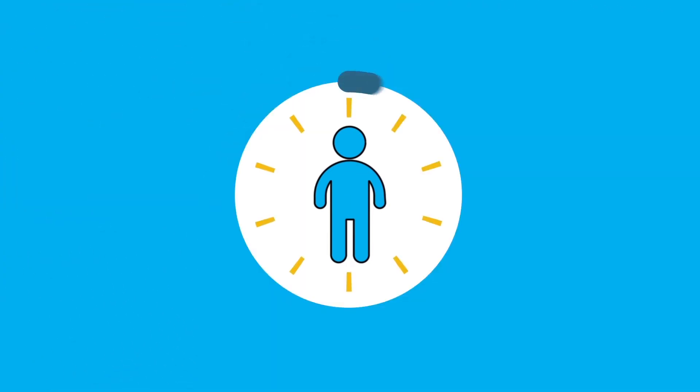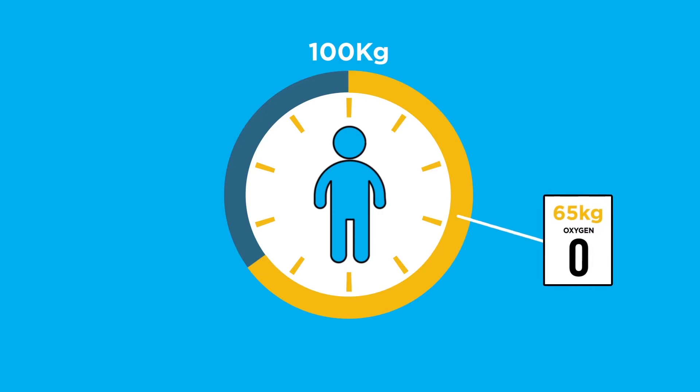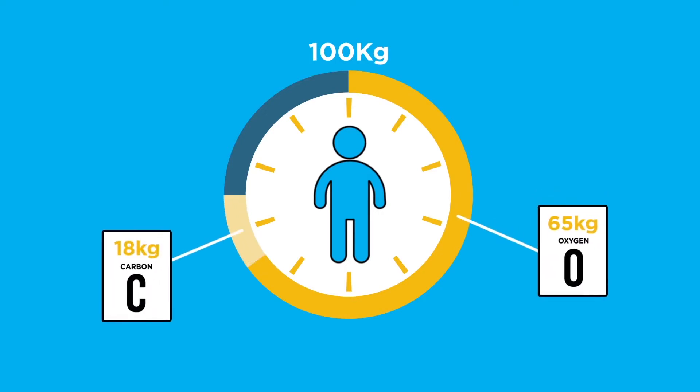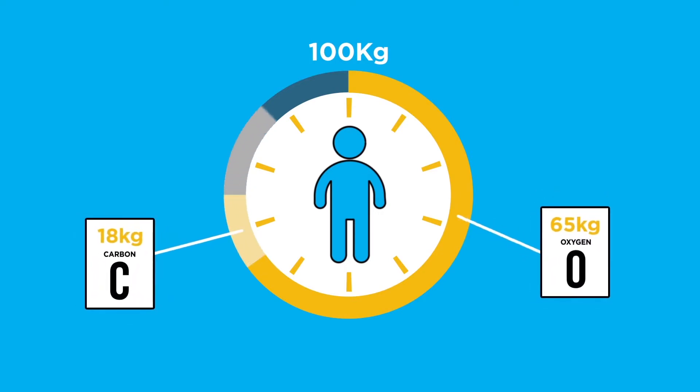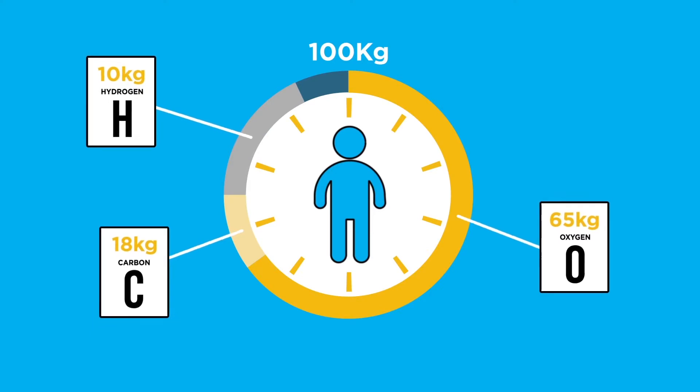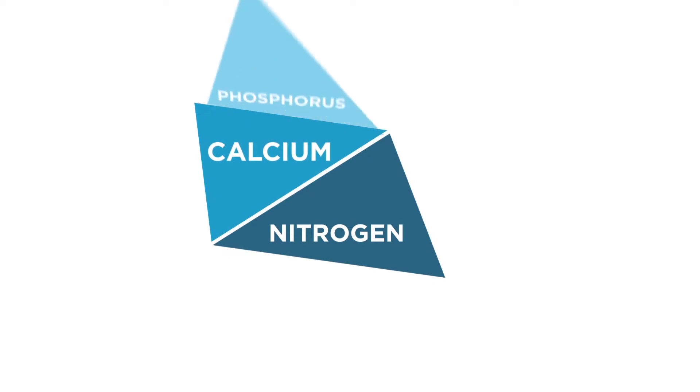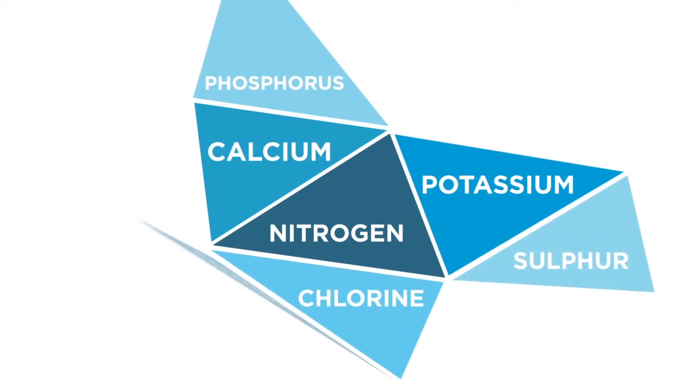For every 100 kilos of weight, 65 kilos are oxygen atoms, 18 kilos are carbon atoms, and 10 kilos are hydrogen atoms, which leaves little room for all the other essential elements: nitrogen, calcium, phosphorus, potassium, sulfur, chlorine, sodium, magnesium, iron, cobalt, copper, zinc, iodine, selenium, fluorine.